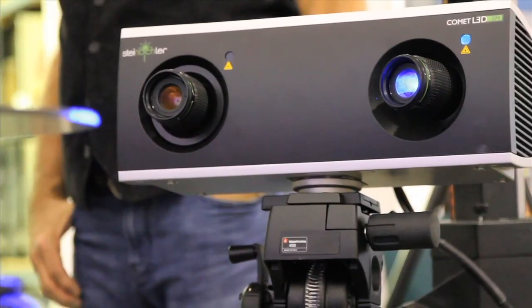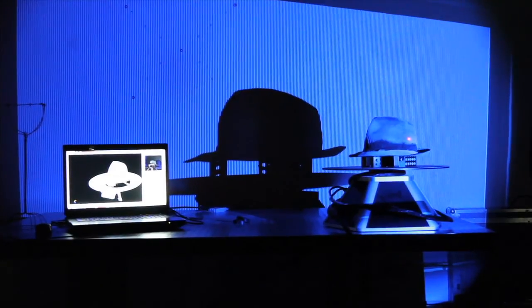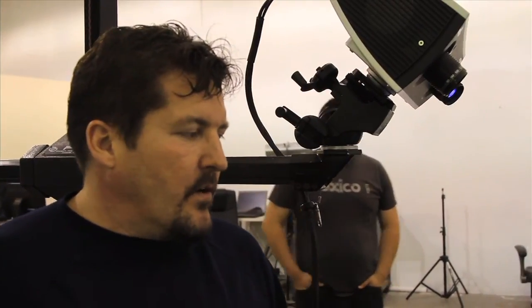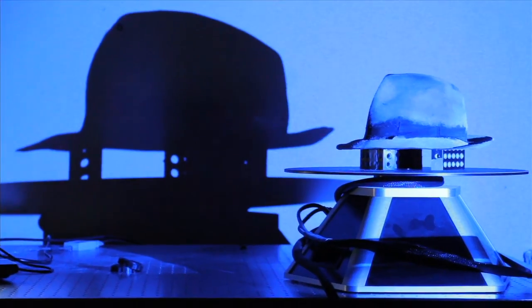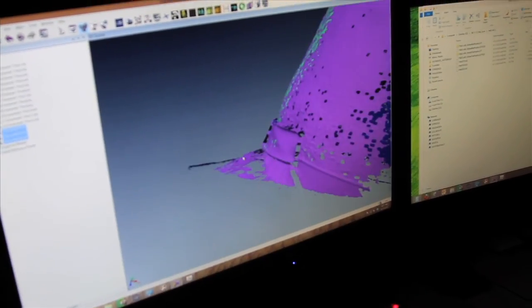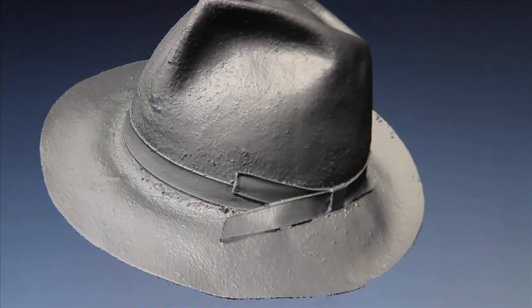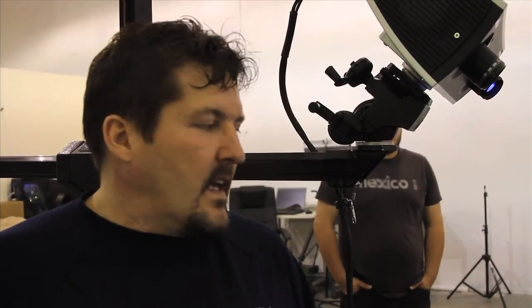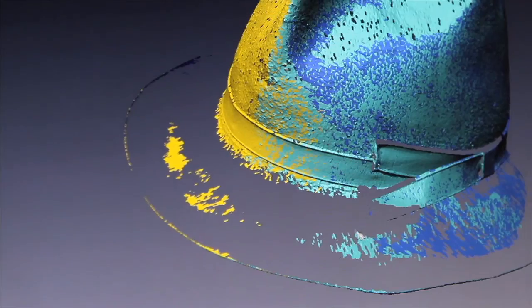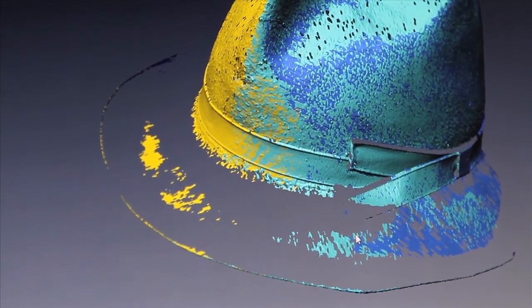At the same time, we have a turntable that's going to move this around and take 12 scans going around. Each scan takes about a minute to capture 5 million points, then moving on to the next scan going all the way around. So we should end up with approximately 50 million points on this hat.